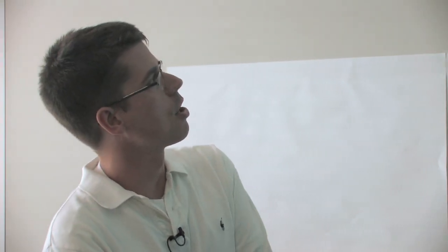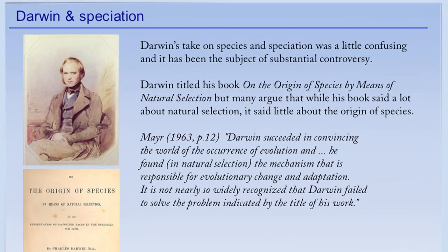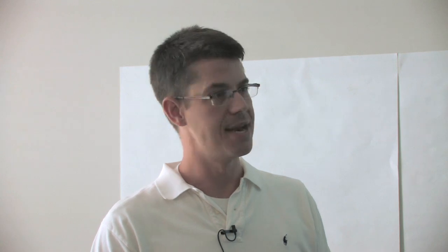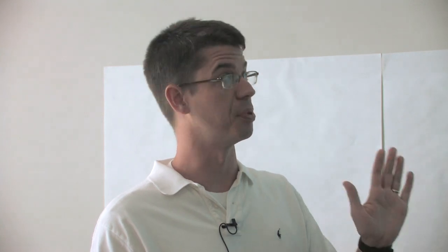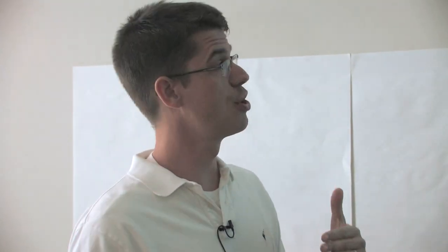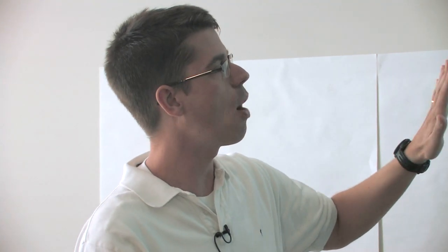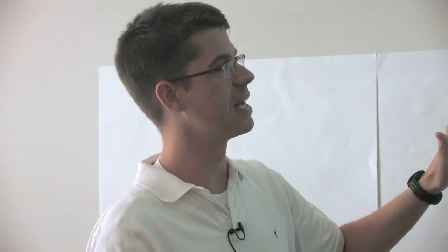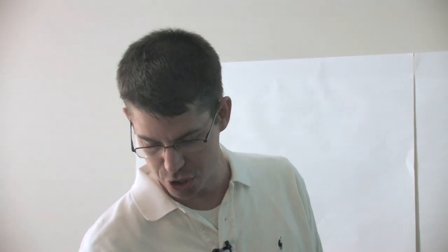Darwin's view on speciation is worth discussing. The title of his book is The Origin of Species, so we'd expect him to tackle that question. Many evolutionary biologists believe Darwin failed at this. Many argue that while his book says a lot about natural selection, it said little about actually the origin of species. Here's Ernst Mayr's take: Darwin succeeded in convincing the world of the occurrence of evolution, and found in natural selection the mechanism responsible for adaptation. It is not nearly so widely recognized that Darwin failed to solve the problem indicated by the title of his work.